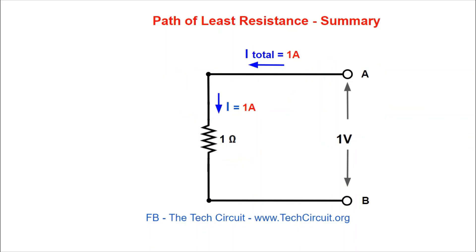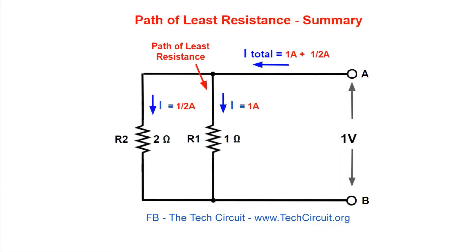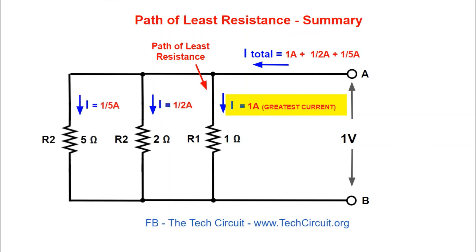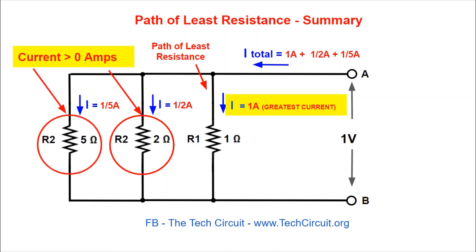So when you consider the term 'current takes the path of least resistance,' that doesn't mean it just does that exclusively. Current favors the path of least resistance, and the greater portion of the circuit current will take that low-resistance path. But current will take all available paths. No matter how many paths you have from point A to B, and no matter what the resistance, the current through each of those paths is simply inversely proportional to their resistance and will be a non-zero value.